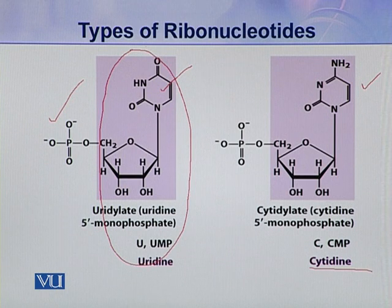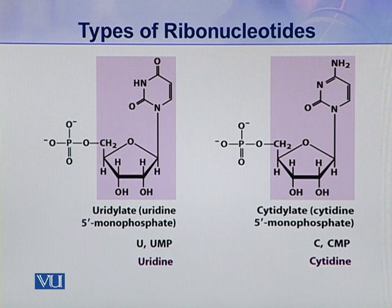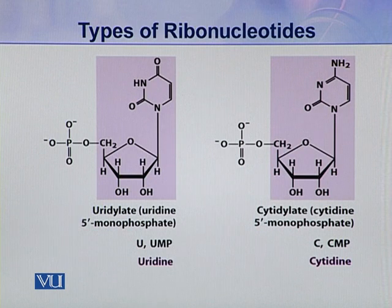And when to this cytidine a phosphoric acid is attached, a complete nucleotide — that is cytidylate — is formed. So these four types of ribonucleotides are present in the ribonucleic acids.